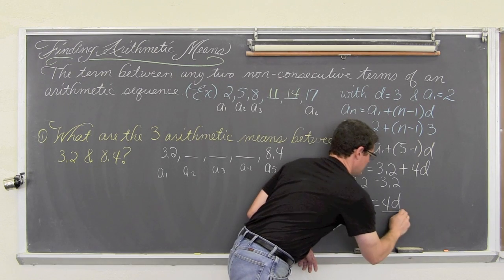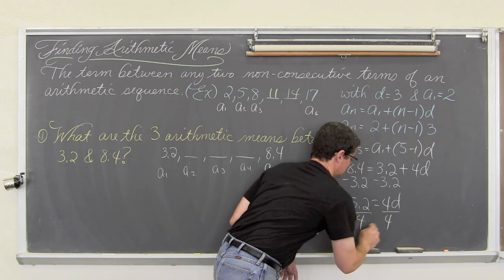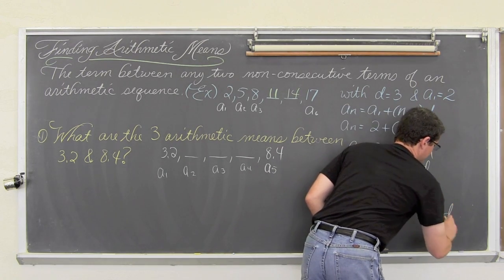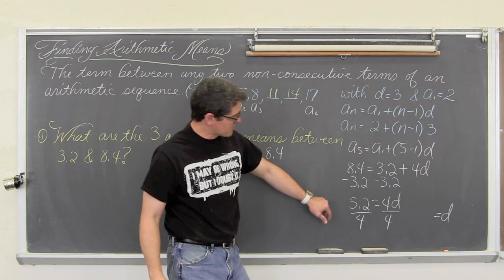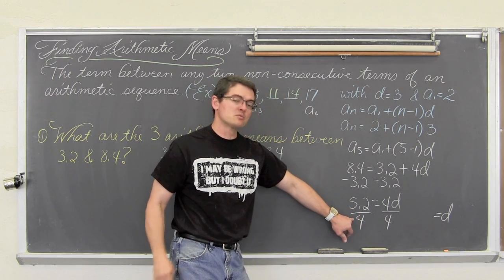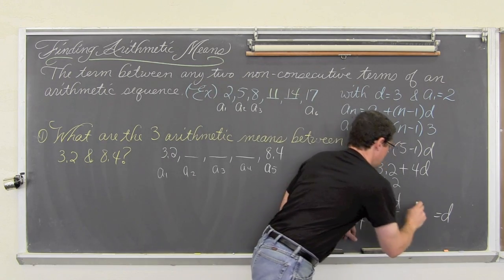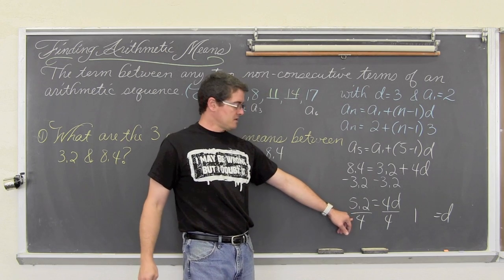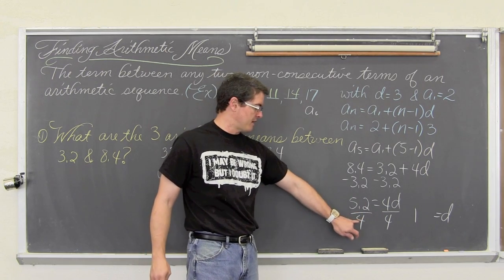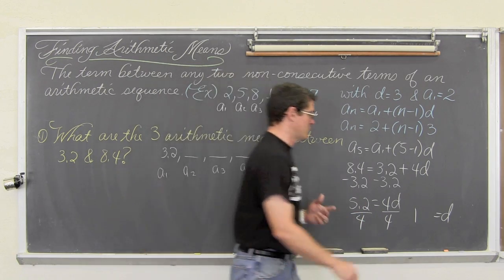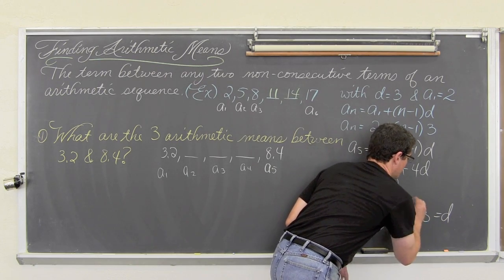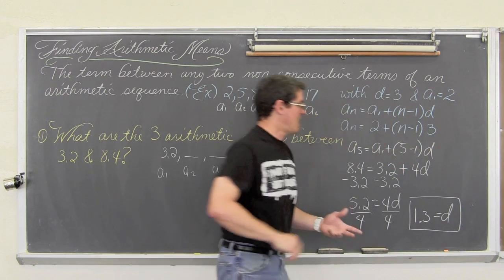Now we are going to divide both sides by 4 and get d is equal to, let's see here, 5 divided by 4. There is 1, 4, and 5. That would leave me a remainder of 1. So 1.2, or 12 divided by 4 is equal to 3. So it is 1.3 is our common difference.